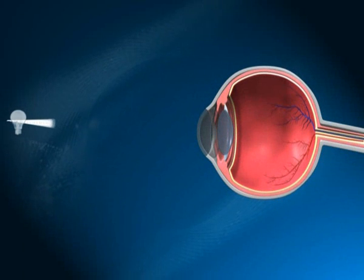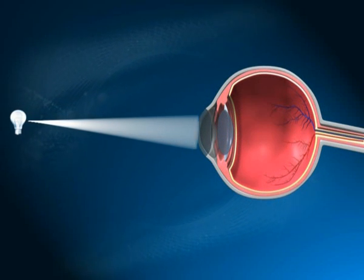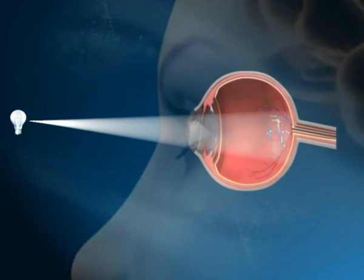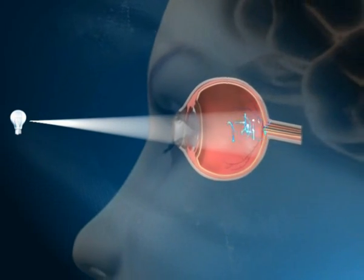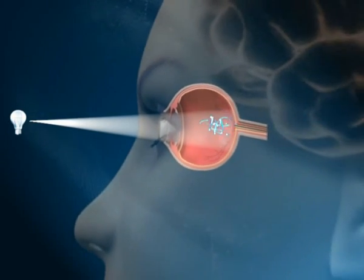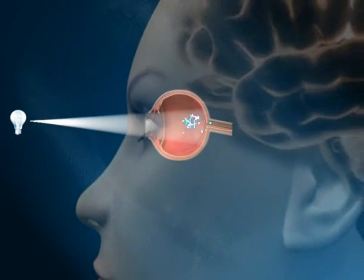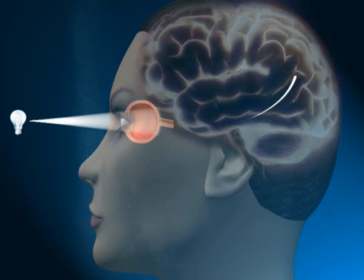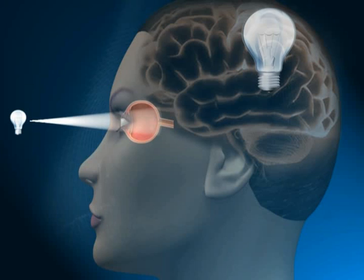Light enters the eye through the cornea and is focused onto the retina. The retina changes light signals into electric signals. These electric signals are sent through the optic nerve to the brain, which translates these signals into the images that we see.